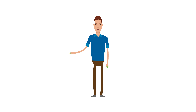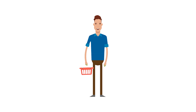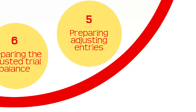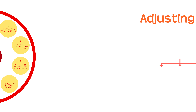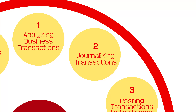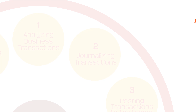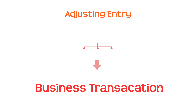We understand that adjustments are often required to get to correct balances. That is why we have this step in the accounting cycle. The adjusting entries is basically a journal entry. The only difference is that, when compared to the second step of the accounting cycle — which is the journalizing of transactions — the adjusting entries directly affect the journal entries that were made in the second step.